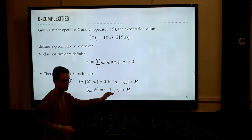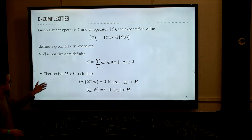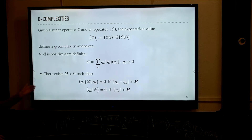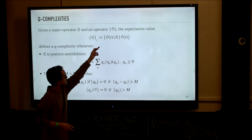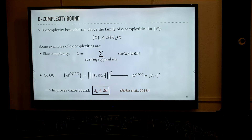Just by taking some superoperator Q that satisfies these properties, the expectation value of this superoperator in the time-evolving operator is going to be a notion of complexity that we call Q-complexity. This definition is interesting because one can prove that Krylov complexity upper bounds the whole class of Q-complexities for a given operator O and a given Liouvillian.